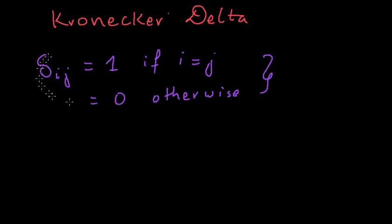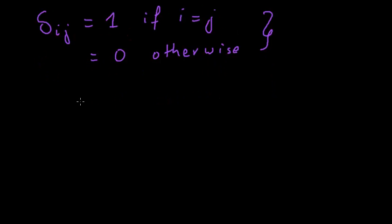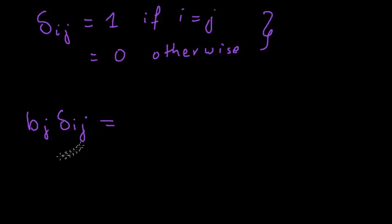Let's look at a few properties of the Kronecker Delta. The first property is that we call it an index replacer. For example, we have b_j times delta_ij. If you haven't watched my video on Einstein summation, please go ahead and watch that first. You should recognize j as the dummy index and i as the free index.